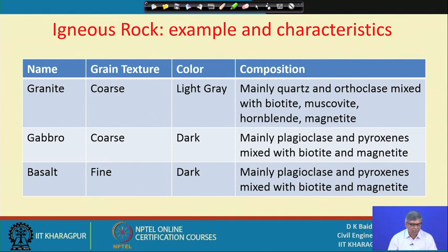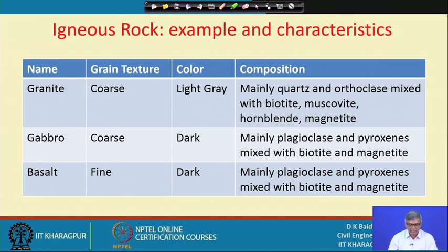Next is gabbro — its grain structure is coarse, color is dark, and it is mainly plagioclase and pyroxenes mixed with biotite and magnetite. Basalt is the third rock — basalt and gabbro are almost similar in composition. Basalt grain structure is fine, its color is dark similar to gabbro, and composition is also similar — mainly plagioclase and pyroxenes mixed with biotite and magnetite. Only by texture can we differentiate between gabbro and basalt. Granite and basalt are commonly available and used in various civil engineering activities.